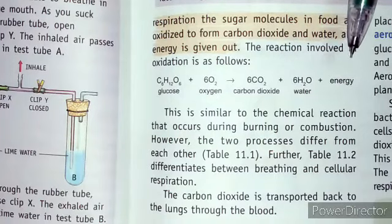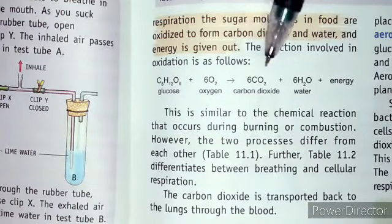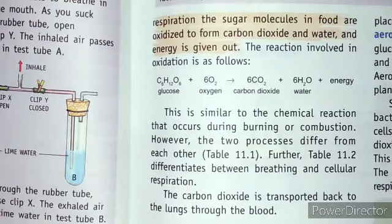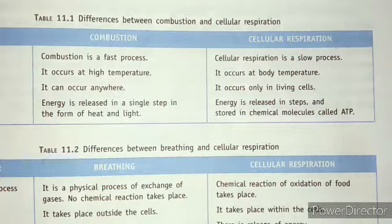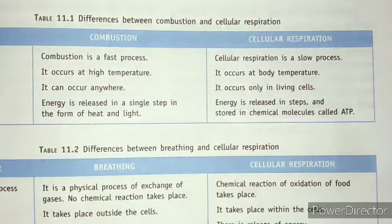This process also occurs in the chemical reaction called combustion. But what is the difference between both? The first difference is that combustion is a fast process, while cellular respiration is slow. Combustion can also occur at high temperature — it requires an ignition temperature — but cellular respiration requires only our body temperature.